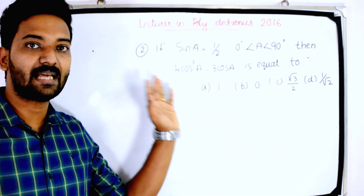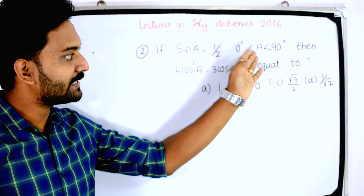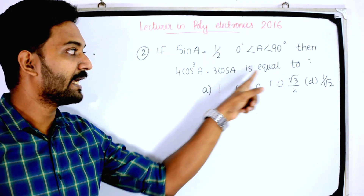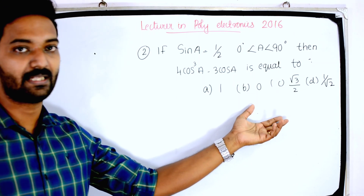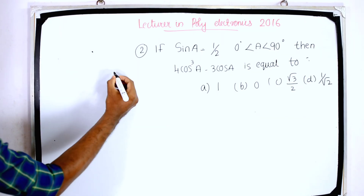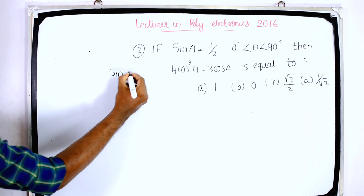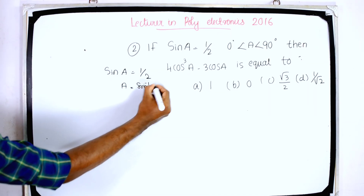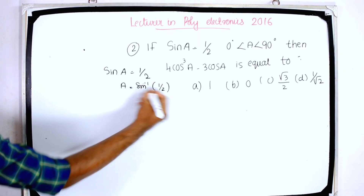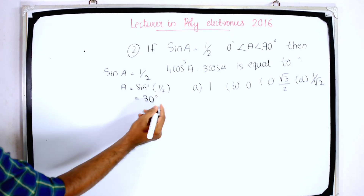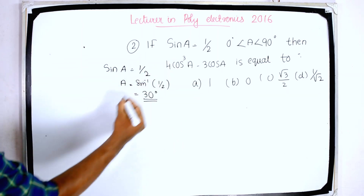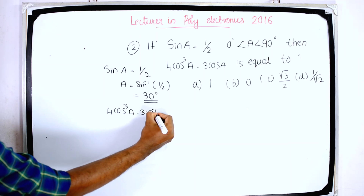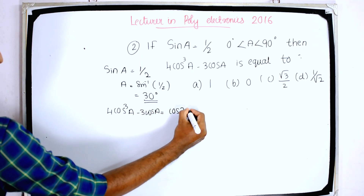Second question: if sin a = 1/2, where 0° < a < 90°, then what is 4cos³a − 3cos a? Looking at the trigonometry table, sin a = 1/2 means sin inverse (1/2) = 30°, so a = 30°. The formula 4cos³a − 3cos a equals cos 3a.